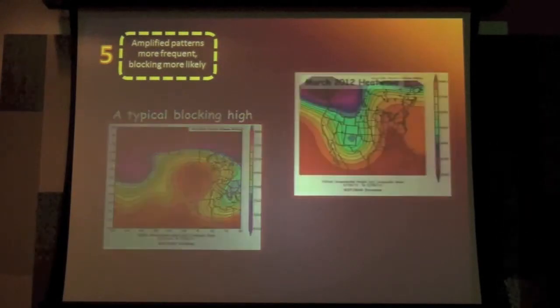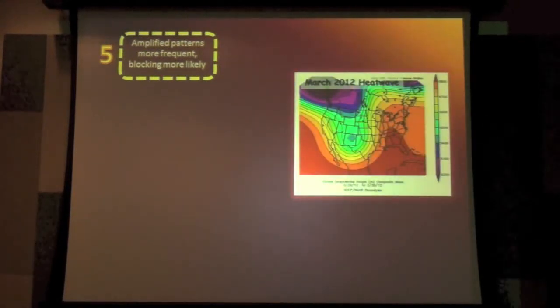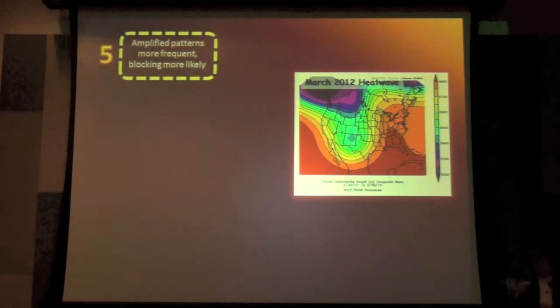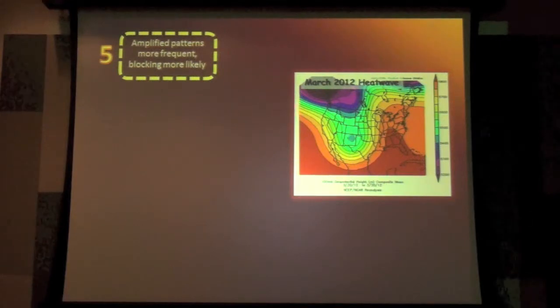But what we are finding is that we know blocks cause a lot of extreme events because when they occur, the atmosphere tends to get stuck and it blocks all the weather patterns from changing. But what we're finding is that many of the extreme events that I showed you in the beginning weren't associated with blocks at all. They were associated with big waves in the jet stream.